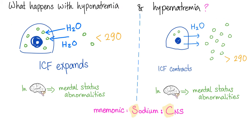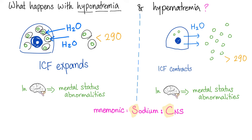Let's suppose you have hyponatremia. Hypo means low, natrium is sodium, emia is the blood. When you have low sodium in the plasma, water will follow the higher concentration of sodium — the higher concentration is now inside the cell. Water flows from the ECF to the ICF compartment. The ICF will expand, the cell will swell. If this cell is in your brain, you get mental status abnormalities. This is hyponatremia.